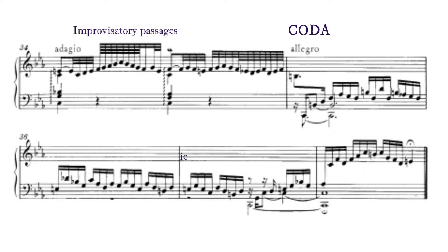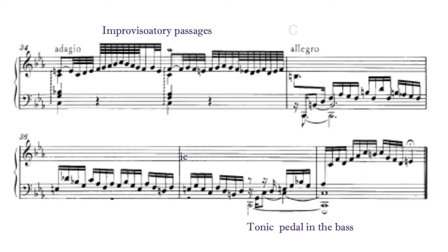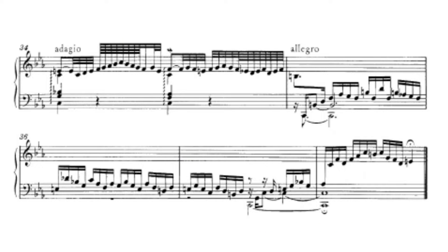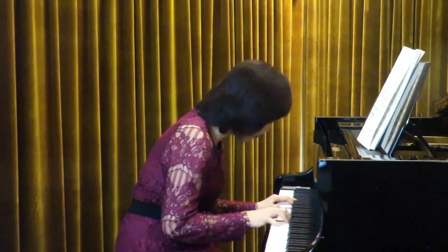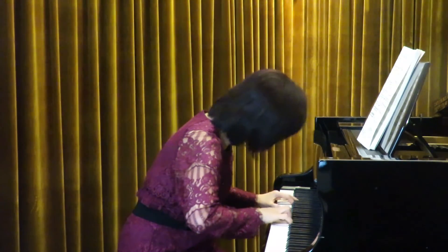When we arrive at the allegro, it is actually the chordal section of the prelude upon the tonic pedal. Ending on the tierce de Picardie, it would be interesting to add just a little more weight on the last note.